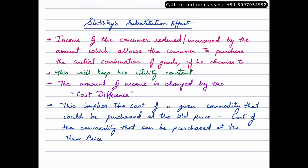Slutsky's substitution effect is based on the fact that whenever the price of a commodity changes, the income of the consumer will be reduced or increased by an amount that will allow the consumer to purchase his initial combination of goods if he chooses to. That means he's not only keeping the consumer's utility constant but he is also ensuring that the real income of the consumer is kept constant, and that is done majorly by changing his income.